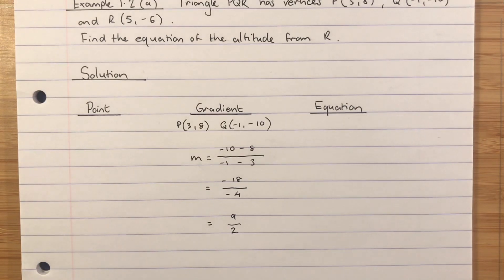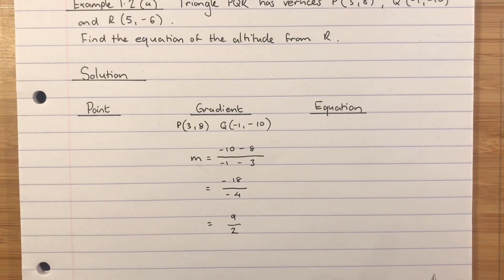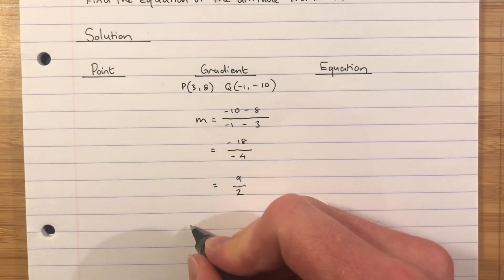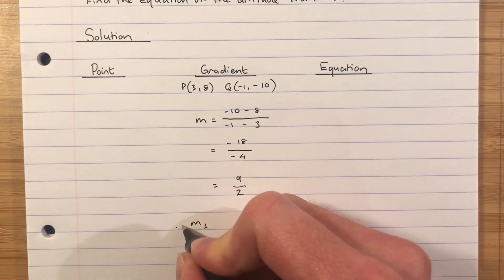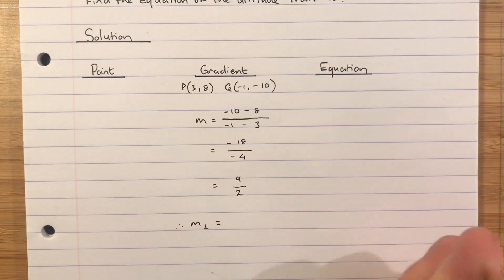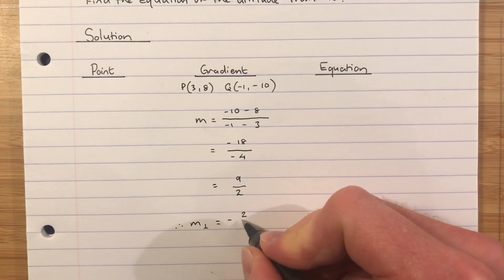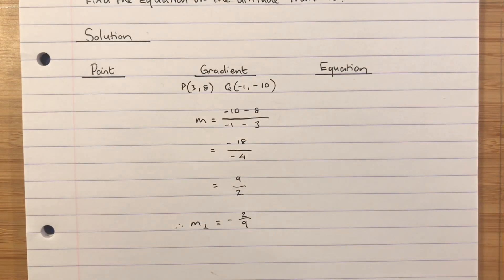So that's the gradient of the line which joins P and Q. Remember the altitude is perpendicular to the opposite side. So it's not 9 over 2 I want as my answer, I want the perpendicular gradient. So therefore the perpendicular gradient will be the negative reciprocal of this, so negative 2 ninths is the gradient that I want to be using.